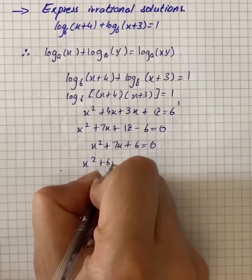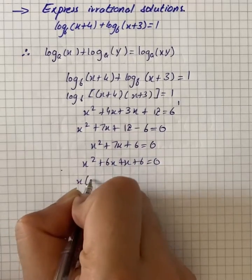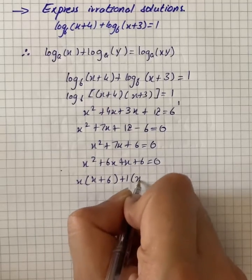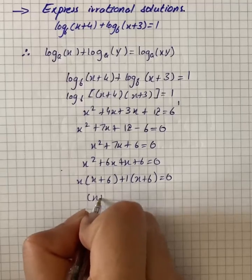It turns out to be x² + 6x + x + 6 = 0. Now we'll start factorization: we have x(x+6) + 1(x+6) = 0, so we have (x+1)(x+6) = 0.